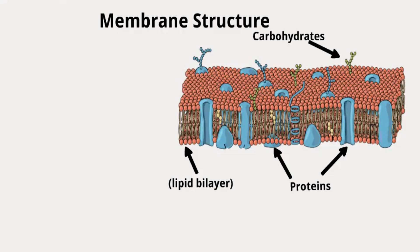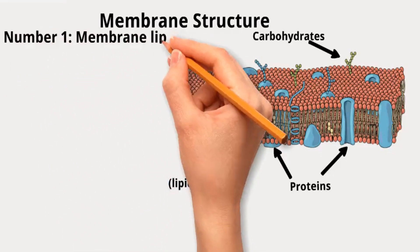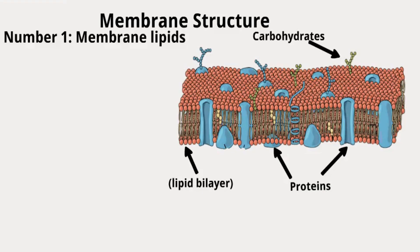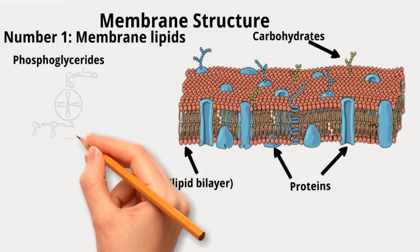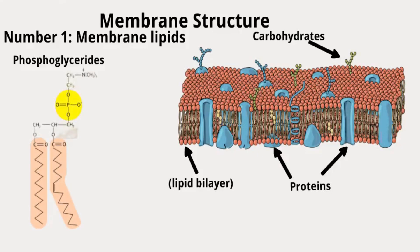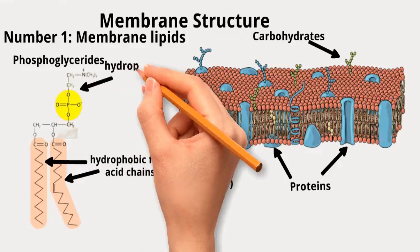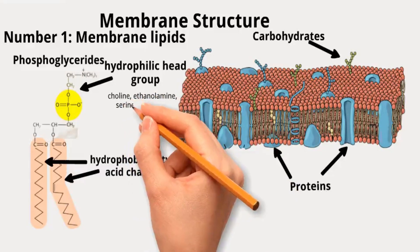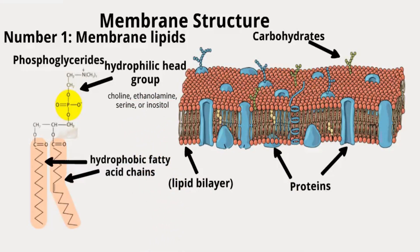The main components of the cell membrane: Number one, membrane lipids. Cell membranes contain various types of lipids; the main ones are phosphoglycerides, sphingolipids, and cholesterol. Phosphoglycerides are a significant class and are considered phospholipids because they contain a phosphate group. They are made up of a glycerol backbone with two hydrophobic fatty acid chains and a hydrophilic head group containing a phosphate group along with another small group like choline, ethanolamine, serine, or inositol — creating a molecule with a water-loving head and water-repelling tails.